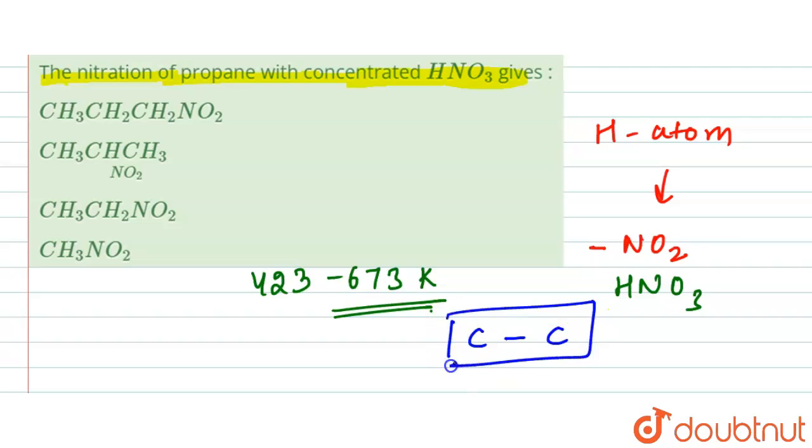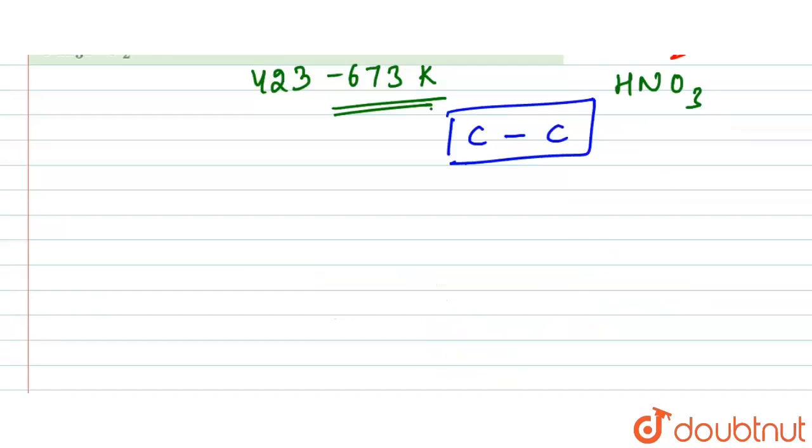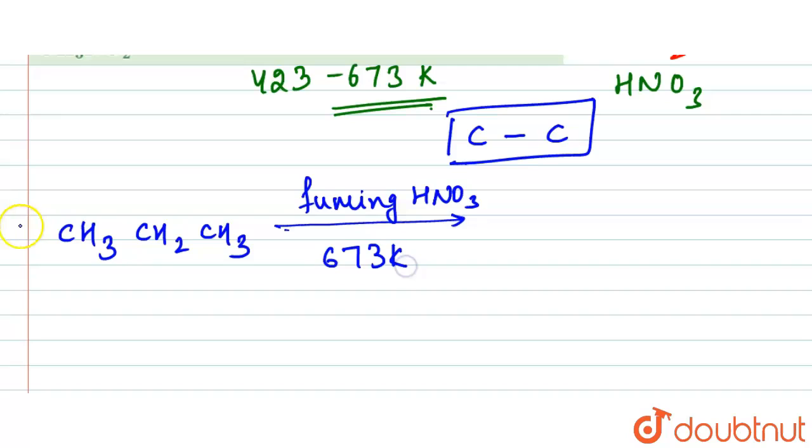Let's examine propane. We have CH3-CH2-CH3. When this propane reacts with fuming HNO3 vapors at a temperature of 673 Kelvin...